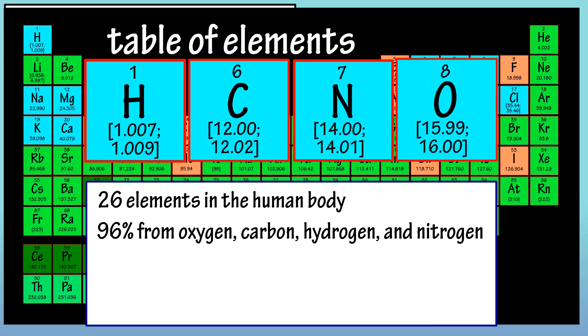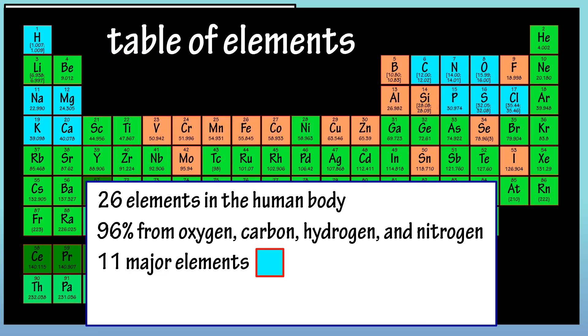Of the 26 elements, 11 are considered to be major elements in the body, and they are the light blue colored elements in the table. The other 15 elements that are in the body are considered trace elements, and they are the peach colored elements in the table.